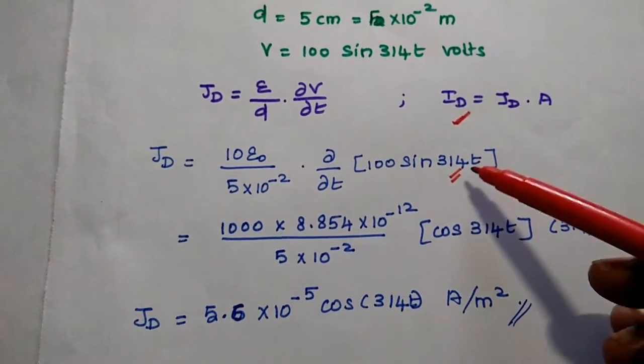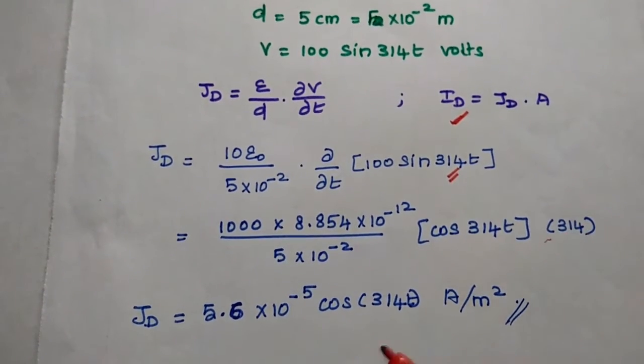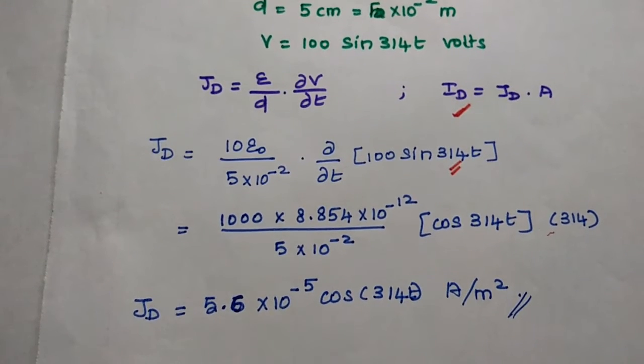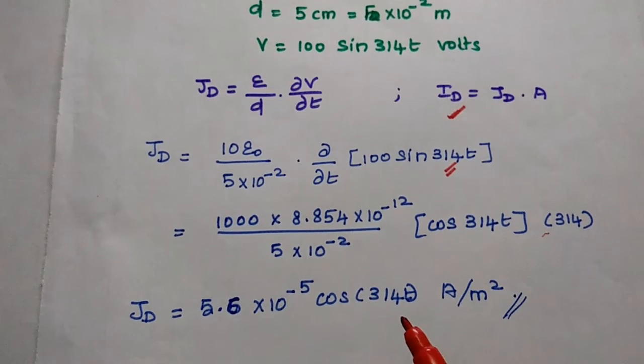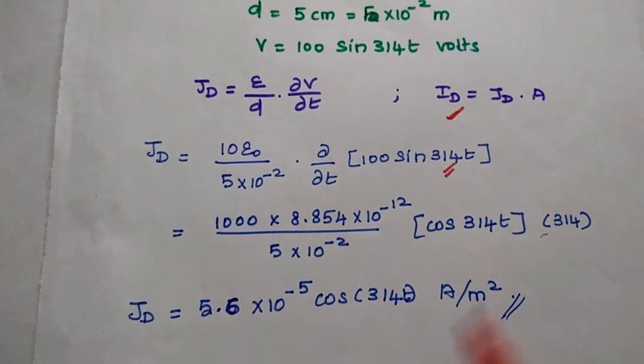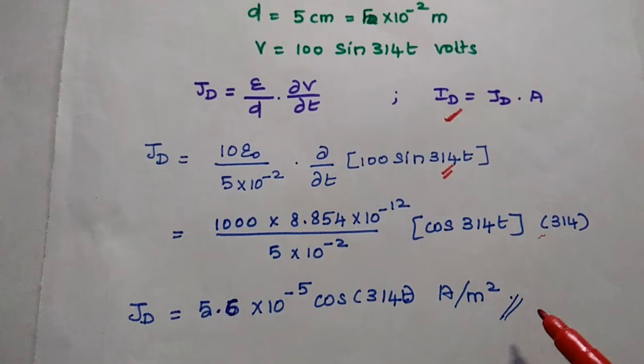Here we can multiply this value to get the answer as 5.6 into 10 to the power minus 5 cos of 314T. Its unit is amps per meter squared.